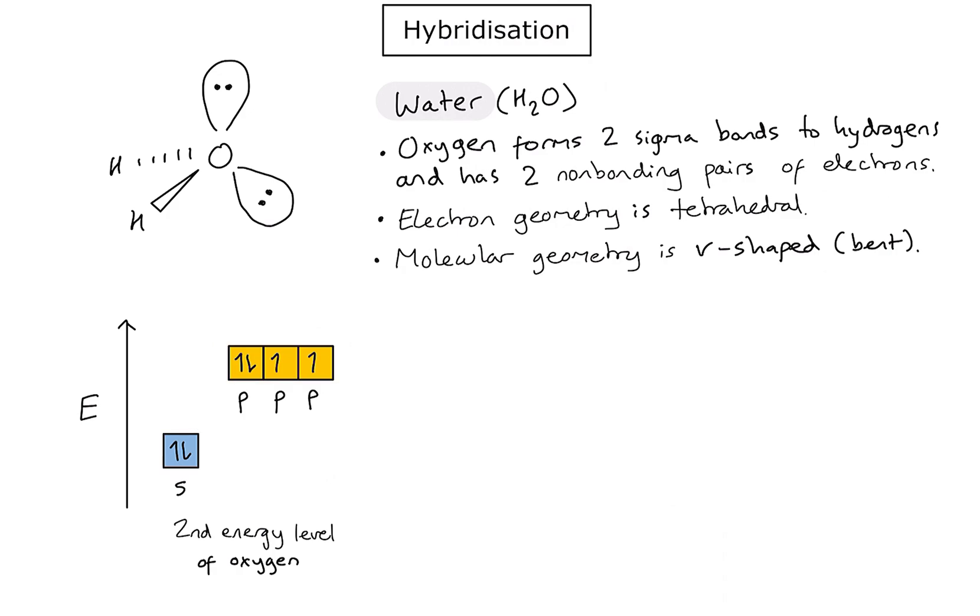Now, at the moment, we know that oxygen has to form two sigma bonds to the hydrogens, so technically speaking it looks like I've got two half-filled orbitals which could be used to form those bonds. However, a problem presents itself.